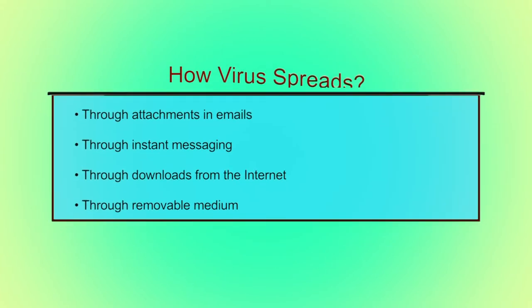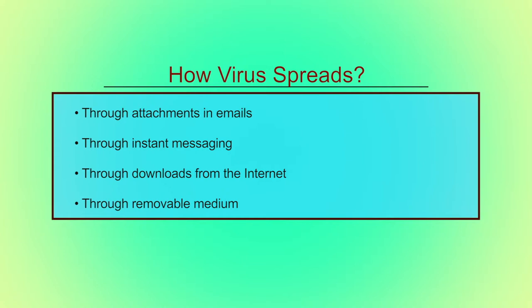How do viruses spread? Viruses are most easily spread by attachments in email messages or instant messaging. This is why it is essential that you never open email attachments unless you know who it is from or are expecting it. A virus on an infected system may send a web address link as a message to other contacts. Thinking the link is from a friend, the recipient may follow the link and the virus spreads to that system as well. Viruses also spread through downloads from the internet and can be hidden in illicit software or files.